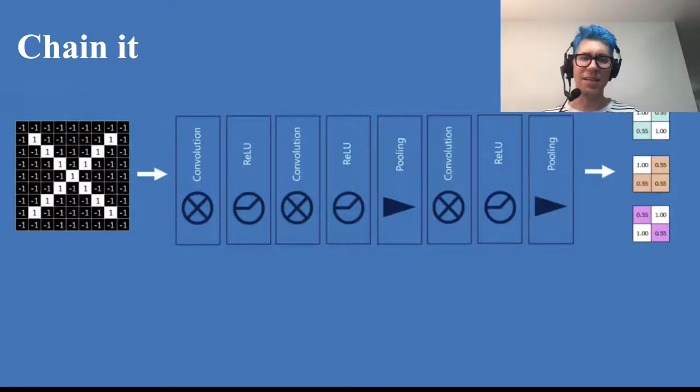Here you see the strategy. Now, like here, we build convolution, ReLU, convolution, ReLU, instead of convolution, ReLU, pooling, convolution, ReLU, pooling.